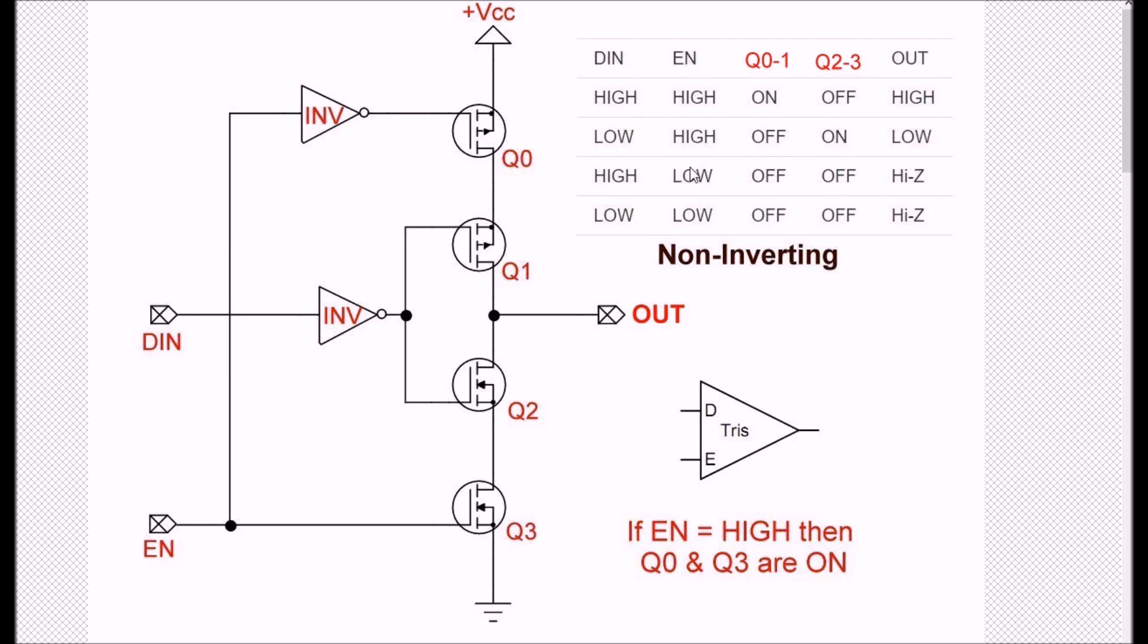Now let's take enable low. At this point, both Q3 and Q0 will be turned off. A low on enable, low on the gate of Q3, is going to turn off Q3. The low is going to be converted to a high, and a high on the gate of the p-channel Q0 is turned off. There is no path to either VCC or ground. Doesn't matter what DIN is at this point. There's no path to VCC or ground because of Q0 and Q3. This condition is called high impedance or high Z as shown by this truth table.